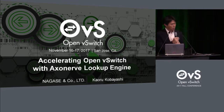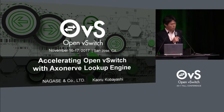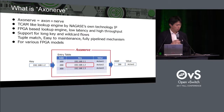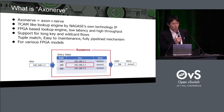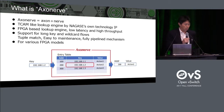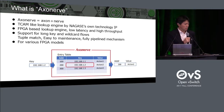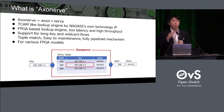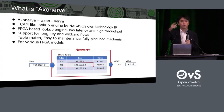I'd like to talk about our OVS acceleration demo by FPGA offloading. There are two things I'd like to talk about today in this presentation. One is Axanab technology, which is our original technology. And second is how we can accelerate Open vSwitch, and our live demo at the booth over there. If you have time, please come to see the demo after this.